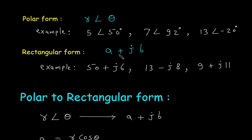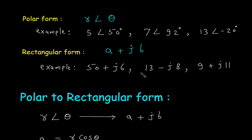A plus jB is the rectangular form. Examples of rectangular form are: 50 plus j6, 13 minus j8, and 9 plus j11. These are the examples of rectangular form.